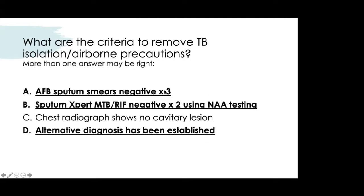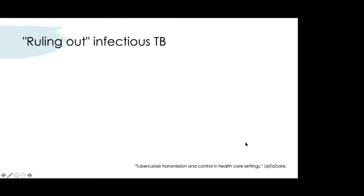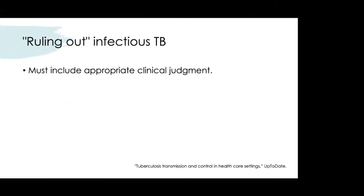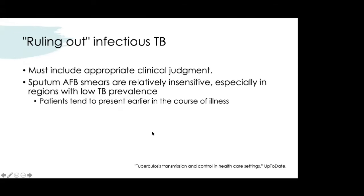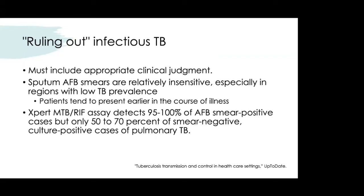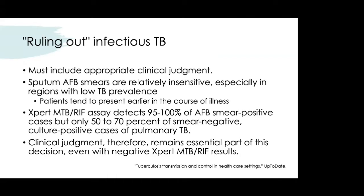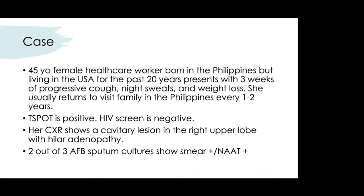Criteria to remove TB airborne isolation include: three negative AFB sputum smears, or at least two negative NATs, or a confirmed alternative diagnosis explaining all symptoms. The chest X-ray findings alone are not a criterion. Overall, clinical judgment is essential — AFB smears can be insensitive, especially in low-prevalence settings where patients present earlier in their illness. The GeneXpert detects 95–100% of smear-positive cases but is less sensitive for smear-negative, culture-positive pulmonary TB.